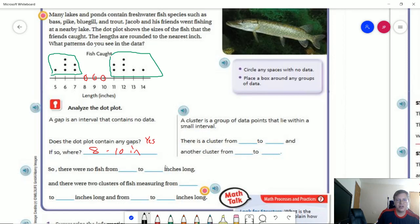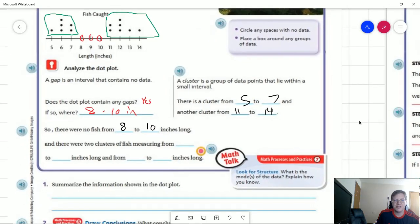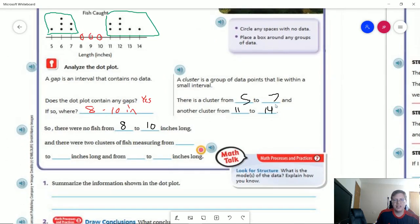So continuing along this line, there is a cluster from 5 to 7 and there is a cluster from 11 to 14. And continuing with this idea of the gaps, that means there were no fishes that were between 8 and 10 inches long. There were two clusters of fish measuring from 5 to 7 and 11 to 14 inches long.